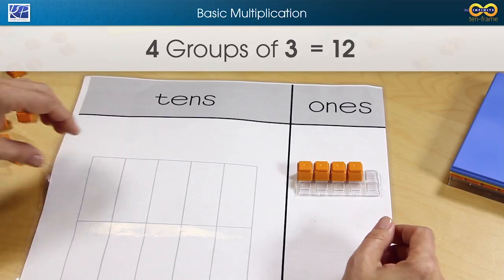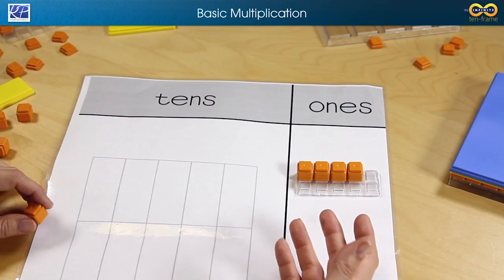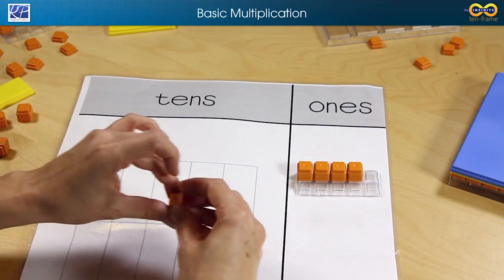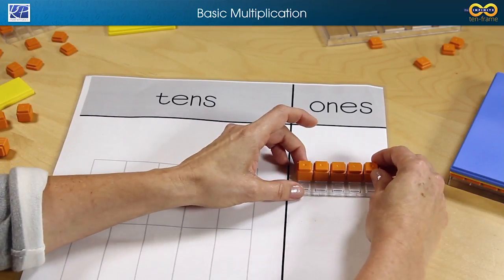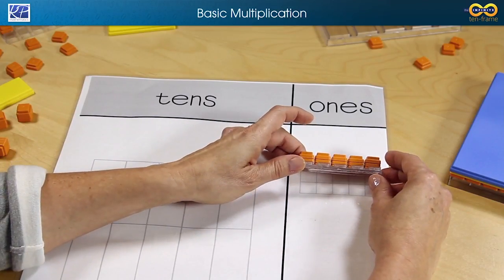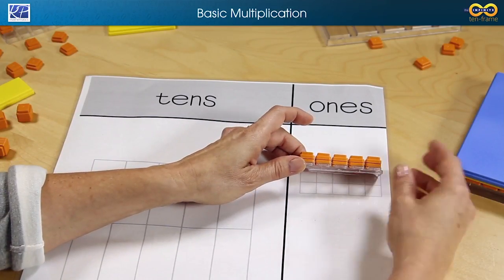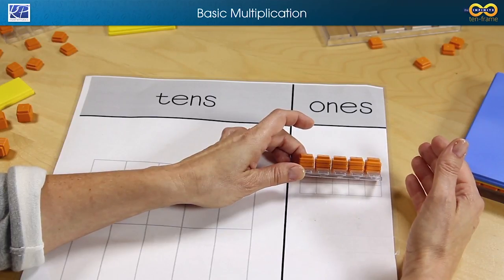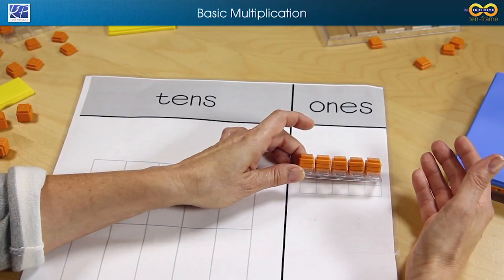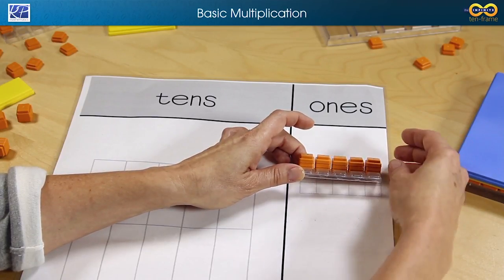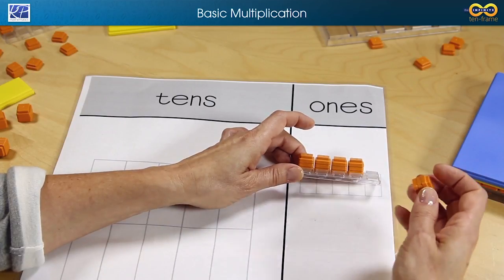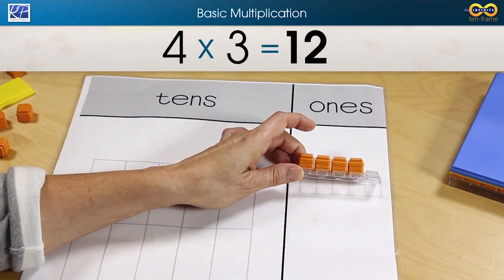Now the interesting thing about this is that if a student didn't know the answer to 4 times 3, they can think of 5 times 3, which is 15. And often we say to kids, if it's 15, just take off 1 — and they say the answer is 14. But here they can see that you're actually taking off one group of 3. So the solution is 4 times 3 is 12.